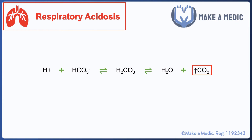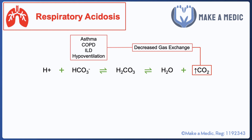Let's look at the example of respiratory acidosis. Respiratory acidosis occurs when there is a decrease in gas exchange in the lungs — anything that promotes the retention of carbon dioxide can cause it. Some examples include asthma, COPD, interstitial lung disease, and hypoventilation.